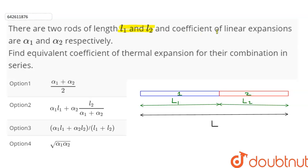L₂ with coefficients of linear expansion α₁ and α₂ respectively. Find the equivalent coefficient of thermal expansion for their combination in series. So we need to find α_equivalent for this setup.